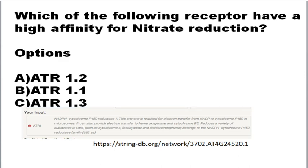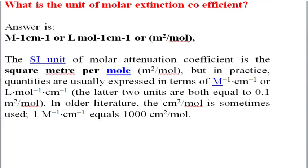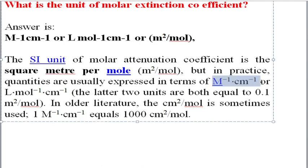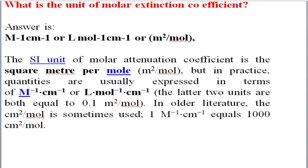I gathered these answers from questions students asked in live comments on other YouTube channels that went unanswered. The next direct question is: what is the unit of molar extinction coefficient? The correct answer is M⁻¹ cm⁻¹, or in molecular weight terms it is m² per mole — specifically square meter per molecule. All three option forms are generally correct. This equation is generally expressed as A = εcl, where epsilon is the molar extinction coefficient.